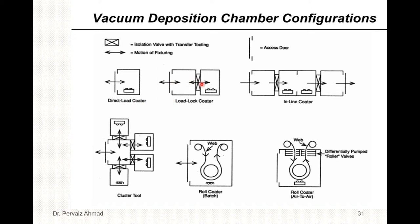If you see this kind of symbol, it stands for a load lock coater. The next symbol is for inline coaters — this symbol represents inline coaters. If you see the more complex symbol, remember it represents the cluster tool — it is more complex because of what the cluster tool involves.